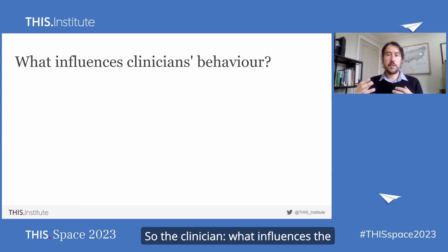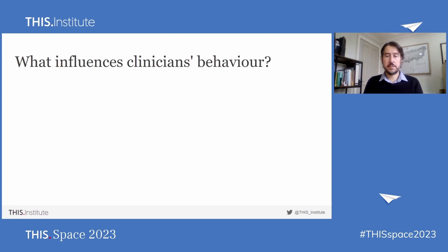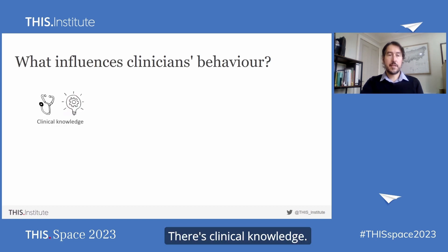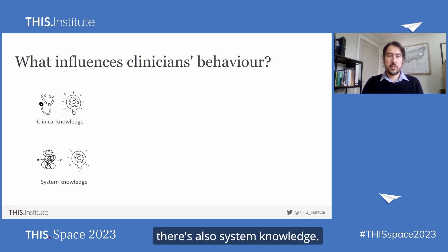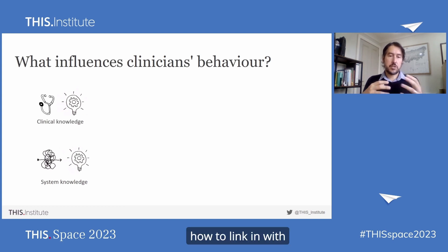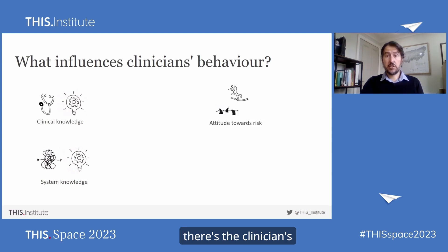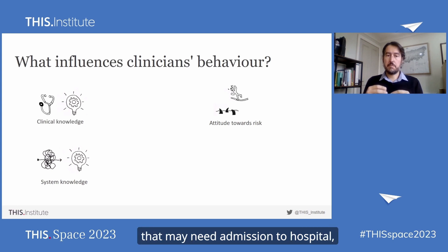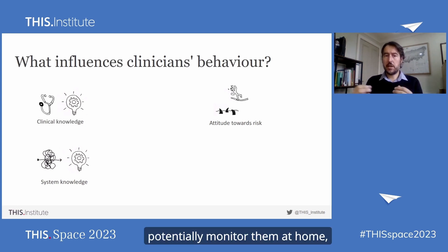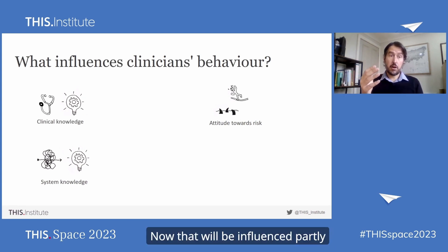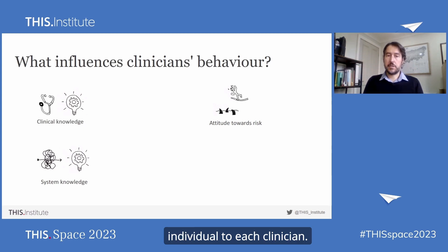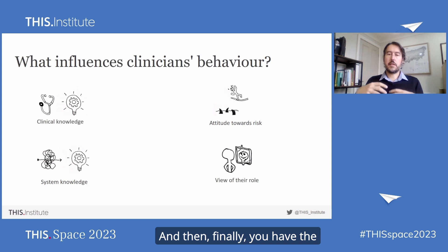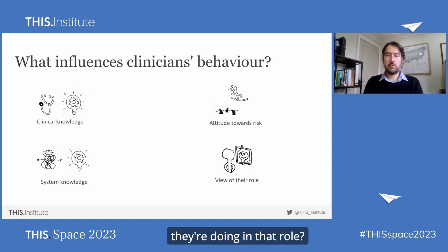What influences the clinician's behaviour and their ability to provide seamless care for a patient? My work found there were four principal things. There's clinical knowledge — you can't treat a patient's condition if you don't have the knowledge to do that. But there's also system knowledge — you may have great clinical knowledge but not know what local services are available or how to link in with those services and coordinate. There's the clinician's attitude towards risk — for instance, if a patient may need hospital admission but could potentially be monitored at home, which way do you go? That's influenced by clinical knowledge, system knowledge, and system factors, but it is individual to each clinician. And finally, there's the clinician's view of their role — what do they think they are doing in that role?